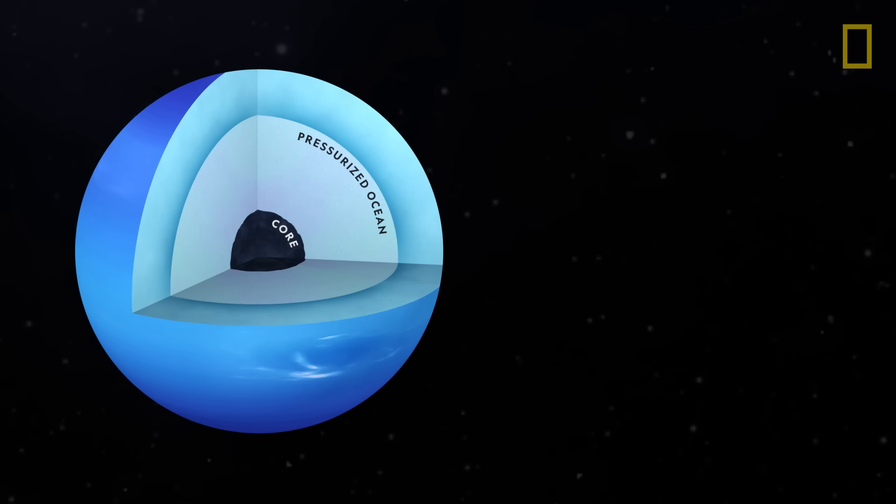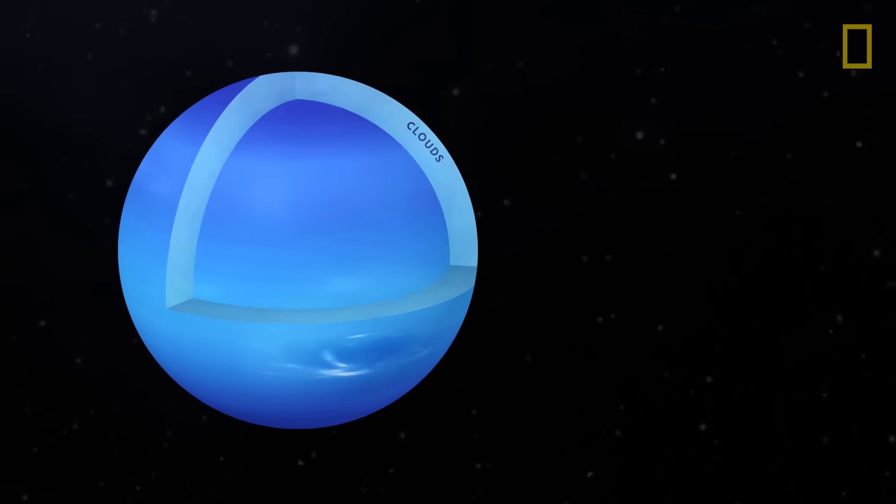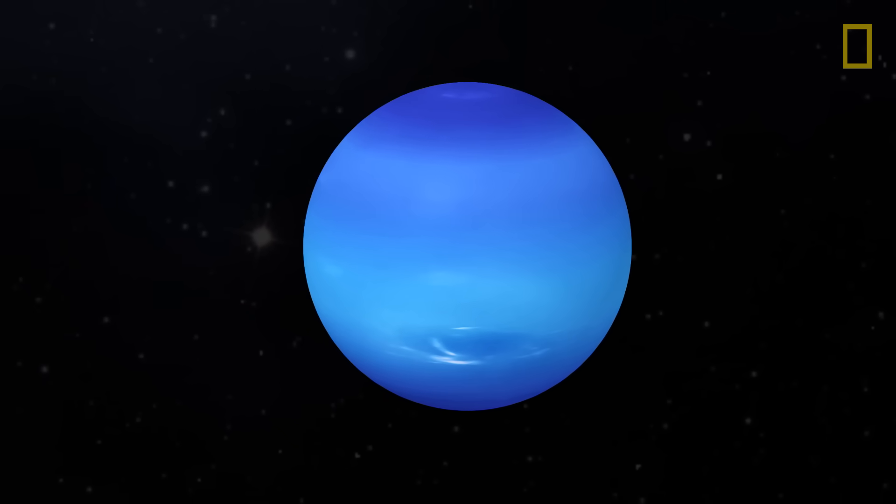The rest of the planet is believed to be a hot, pressurized ocean of water, methane, and ammonia ices surrounded by a layer of clouds. These clouds, predominantly made of hydrogen and helium, include traces of methane, which give this ocean world its rich blue color.